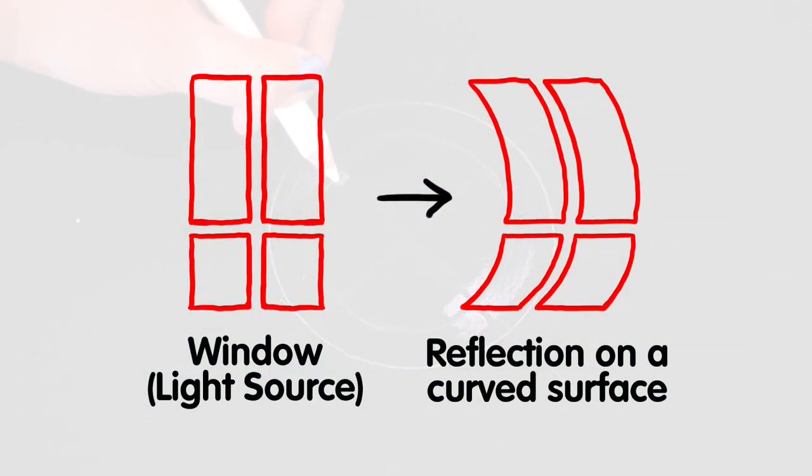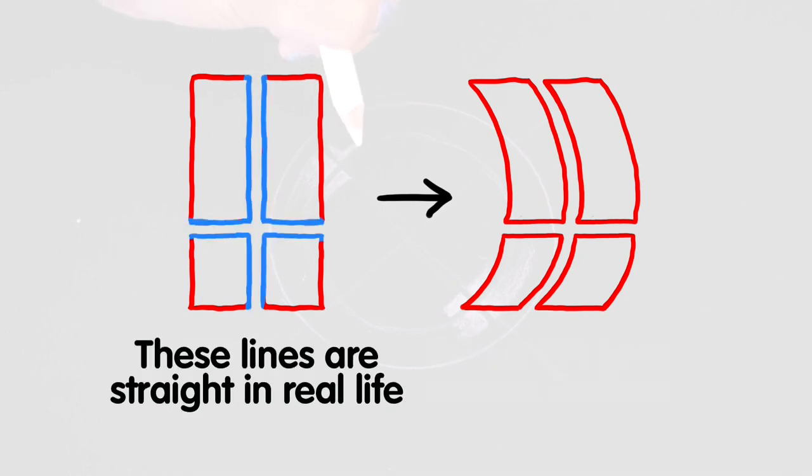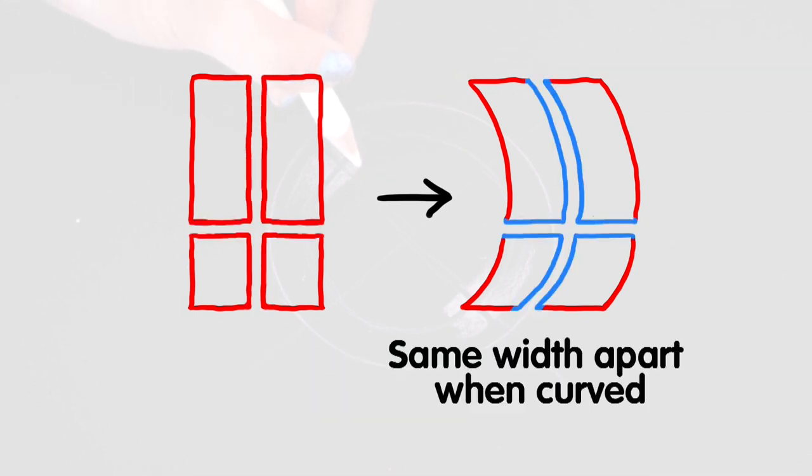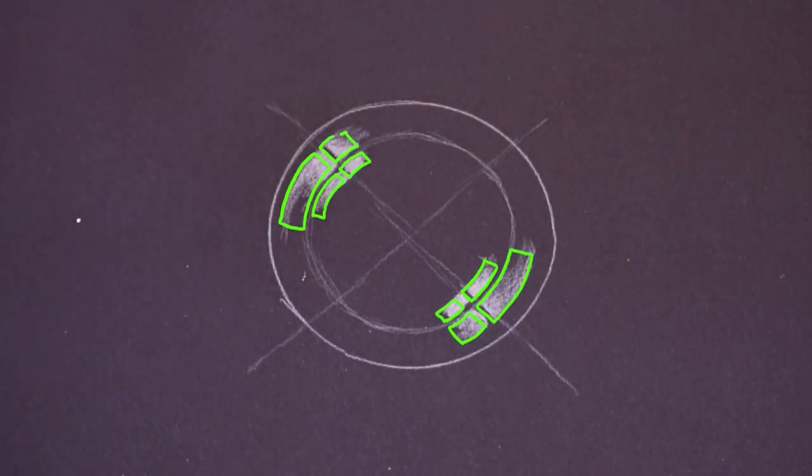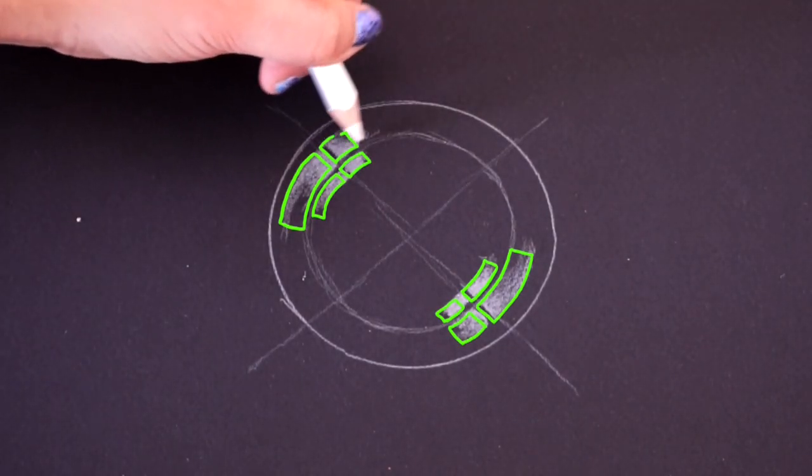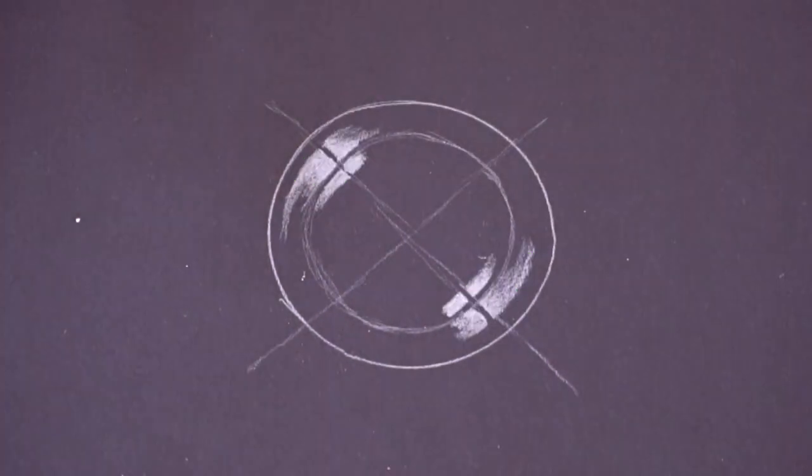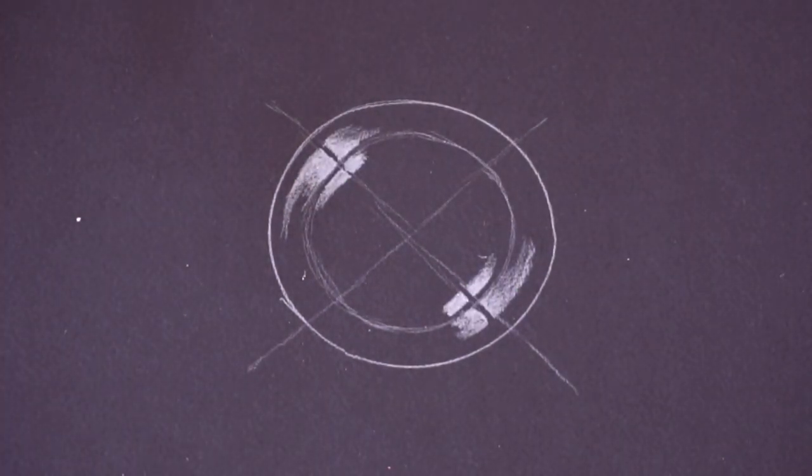I've seen a few other tutorials on YouTube get this part wrong because they didn't realize that the pattern on a soap bubble is actually supposed to be a window. So keep this in mind and try to make your lines curve evenly with the bubble.